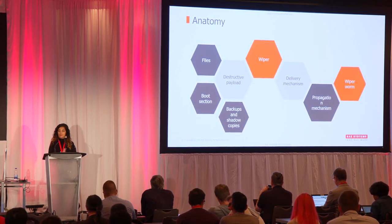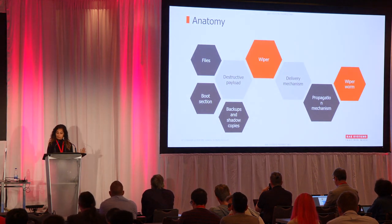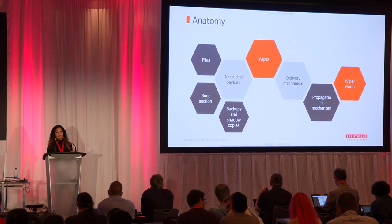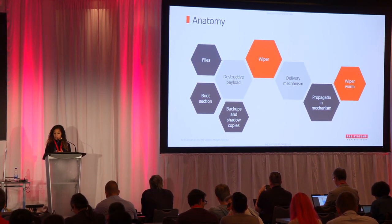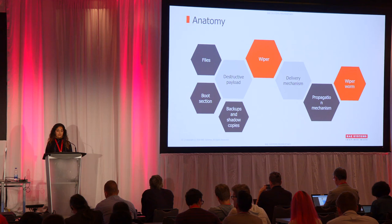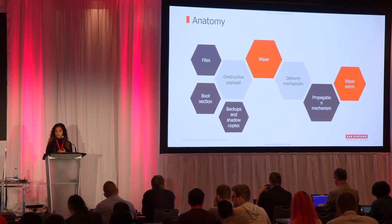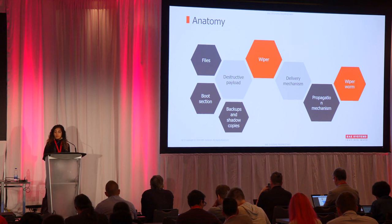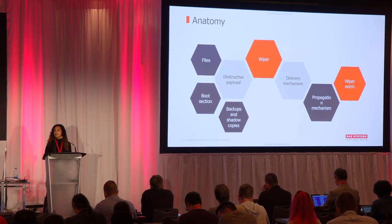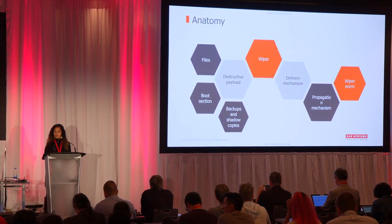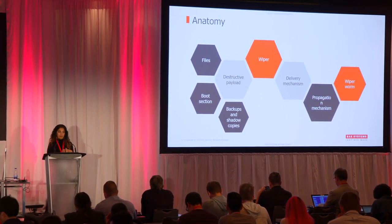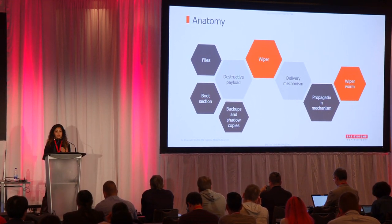Very basically, the anatomy of a wiper: you have the payload and you have a delivery mechanism. The payload will typically target one or a subset of three areas. Files are pretty popular — a lot of the time this can be based on file extension or particular folders. The boot section is also targeted — the MBR can be corrupted. And lastly, you sometimes see backups and shadow copies being targeted, since files will often remain intact unless you delete the backups.